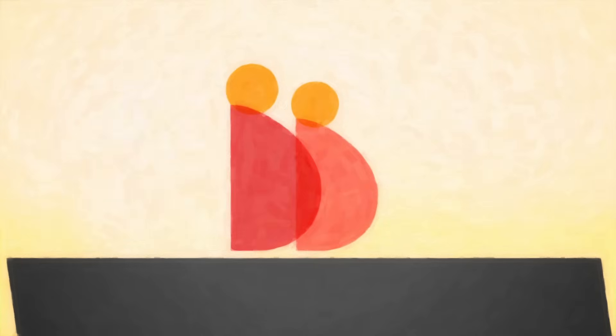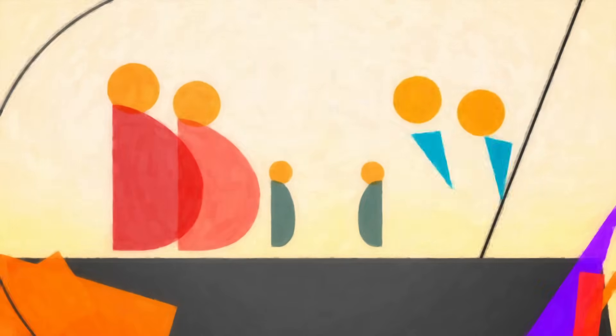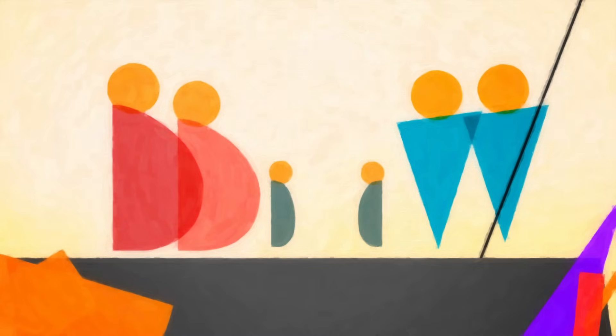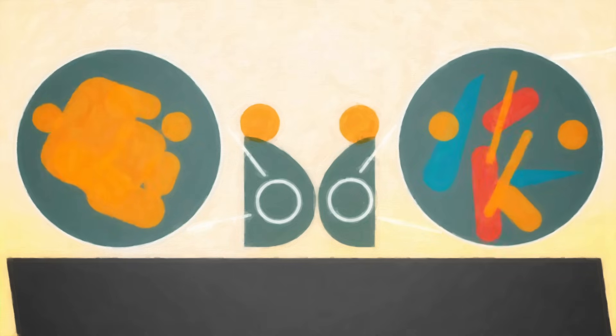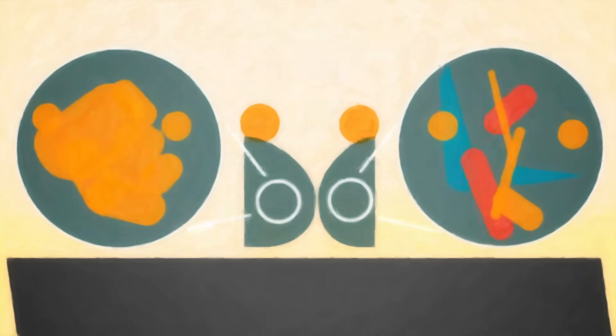Yet our genetic makeup also plays a part. Studies on families and on separated twins have shown a clear causal hereditary relationship to weight gain. Recent studies have also found a link between obesity and variations in the bacteria species that live in our digestive systems.